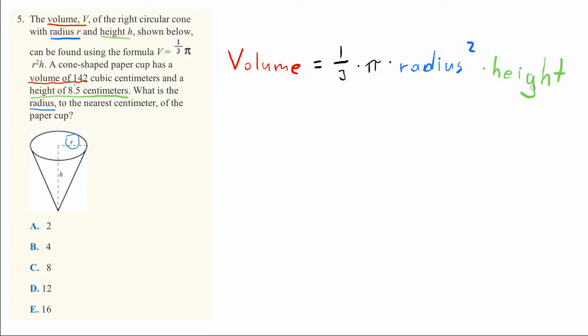We know some of these values, so let's substitute them in. They told us the volume is 142 cubic centimeters, so we'll write 142. One-third pi are just constants, so we'll keep them.